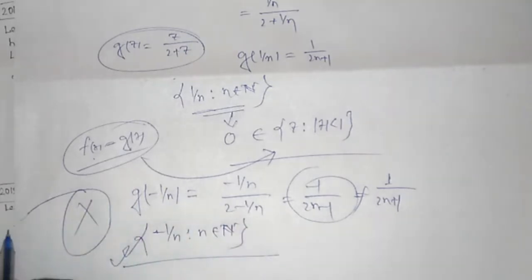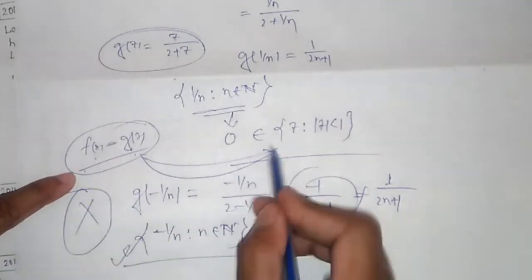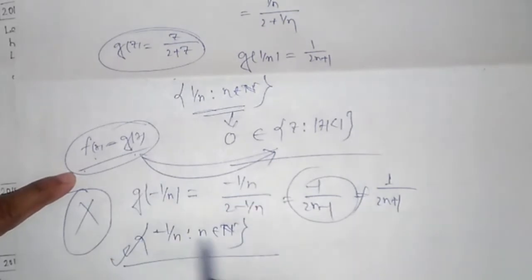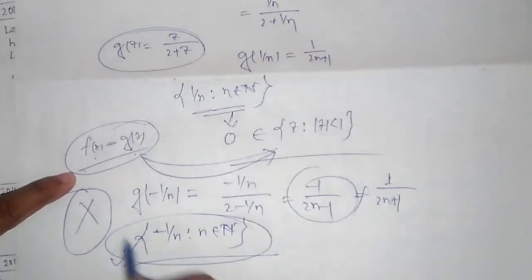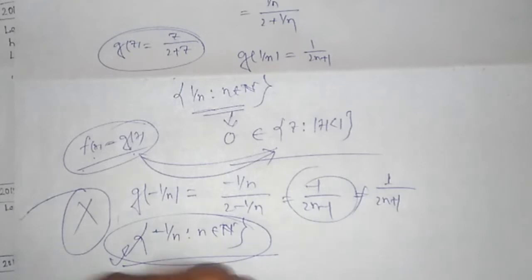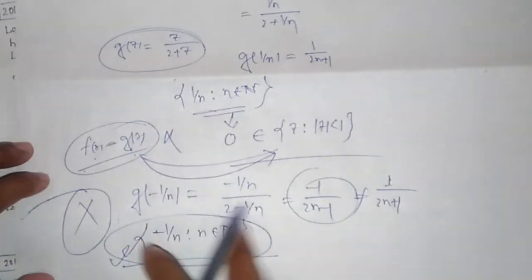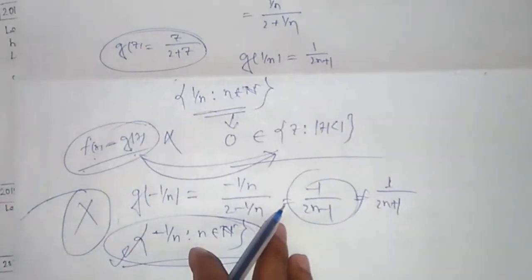By the Identity Theorem, f(z) = g(z) throughout the domain, but at the points {-1/n}, they are not the same. So such a function cannot exist — option 2 is false.